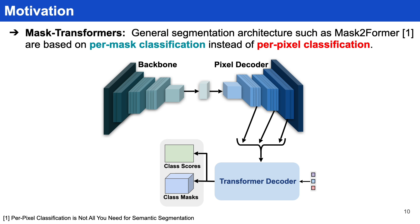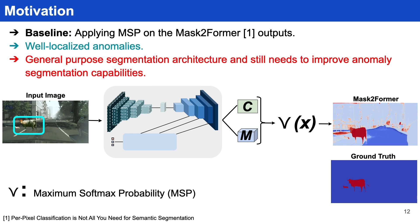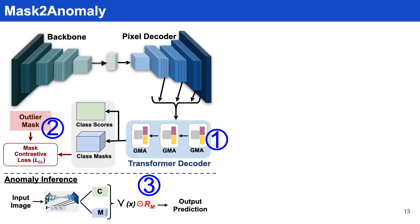Below is the image of the Mask2Former architecture. If we just apply MSP on top of Mask2Former outputs, we are able to get well-localized anomalies. However, Mask2Former is a general-purpose segmentation architecture and there is still a need for improvements that are specifically intended for anomaly segmentation.